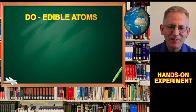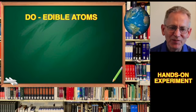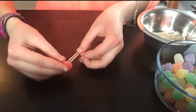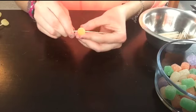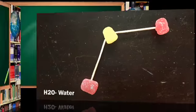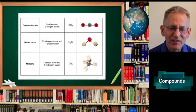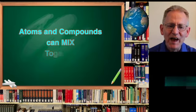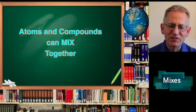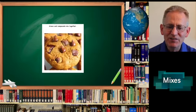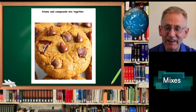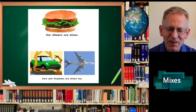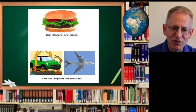Atoms join together to make new chemicals called compounds. Water is a compound called H2O: two hydrogen atoms and an oxygen atom make one water molecule. That is, groups of atoms that join together are called molecules. Here's a hands-on experiment: Do edible atoms. Put gumdrops on toothpicks to show how atoms join to make molecules. Carbon dioxide, water vapor, and methane are all examples. Atoms and compounds can mix together. We see this when we bake cookies and eat them too. Our dinners are mixes. Cars and airplanes are mixes too.